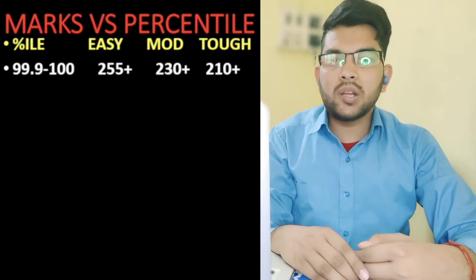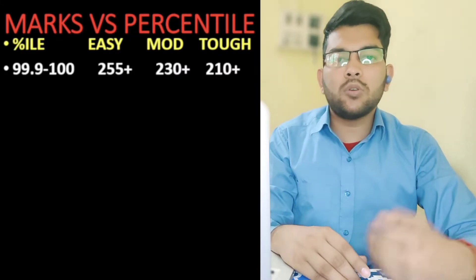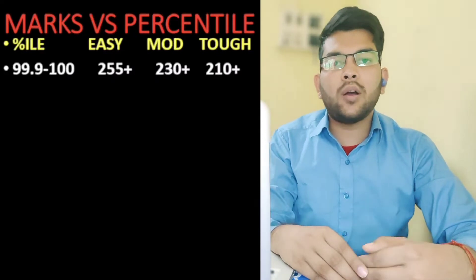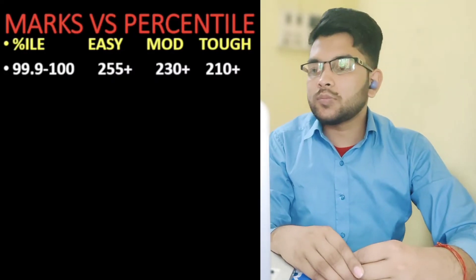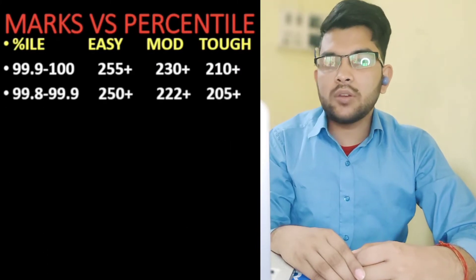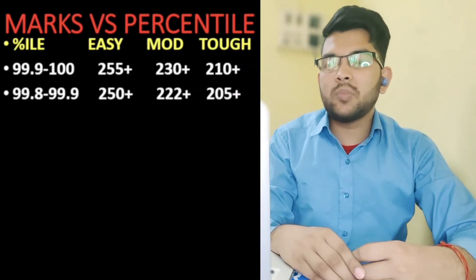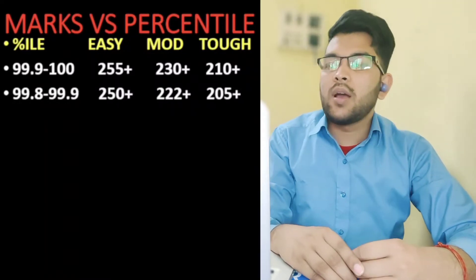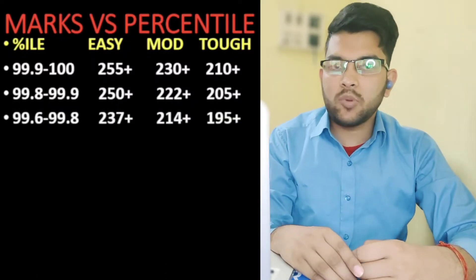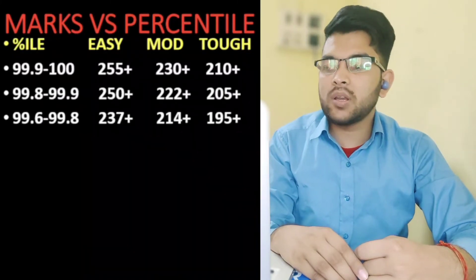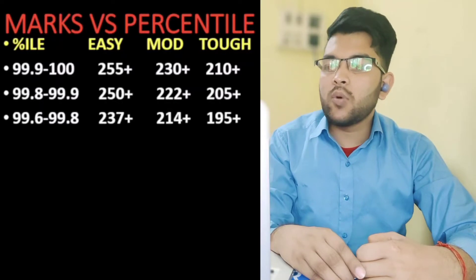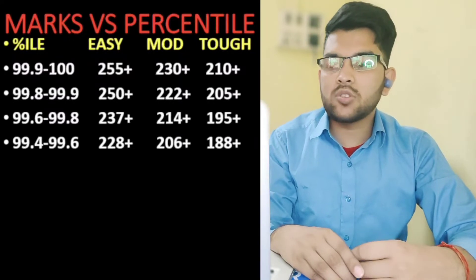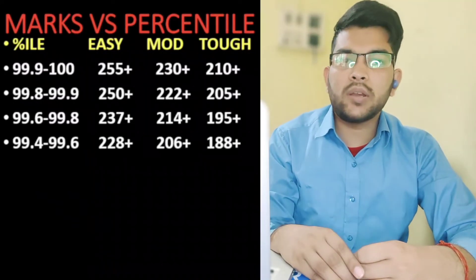Many of you are from SC, ST, and PWD categories, and if you are from general or OBC then also 170–180 marks will do the work for you. For 99.8 to 99.9 percentile: easy paper 250+ marks, moderate 220+ marks, and tough paper 205+ marks. For 99.6 to 99.8 percentile: easy 237+, moderate 214+, tough 195+. For 99.4 to 99.6 percentile: easy 228, moderate 206, and tough 188.